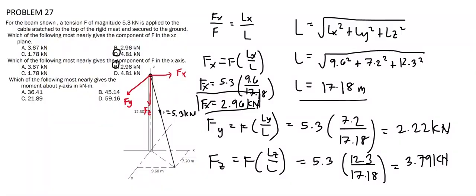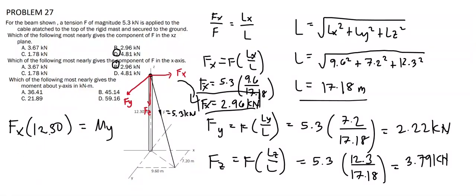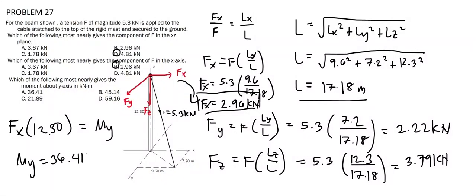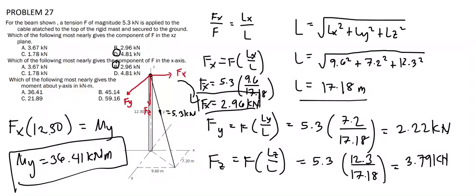And for the last problem, we are tasked to find the moment of the force about the y-axis in kilonewton meters. Based on the figure, the only force that could induce a moment along the y-axis is fx. So the moment about the y-axis equals fx times the moment arm (12.30 m): My = 2.96 × 12.3 = 36.41 kN·m, which is answer letter A.